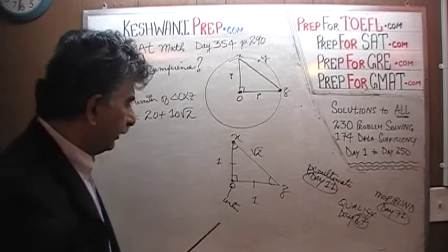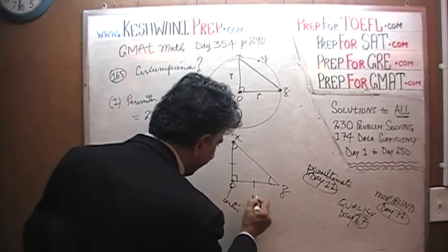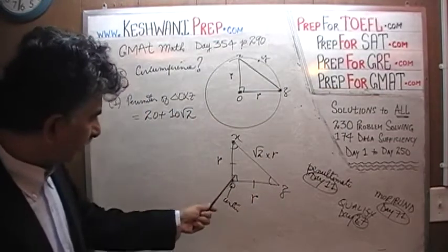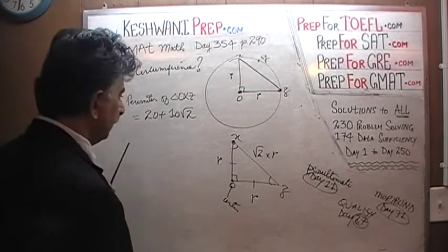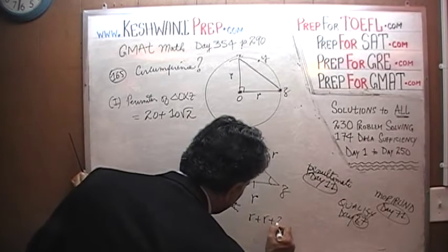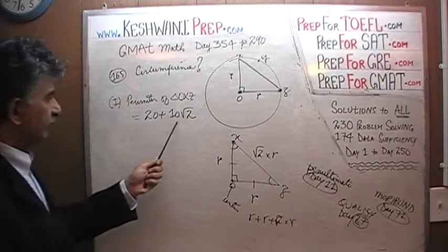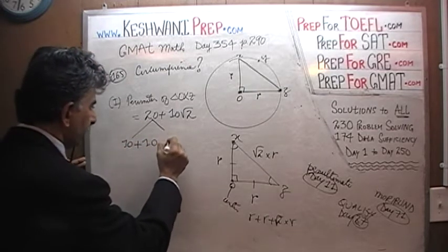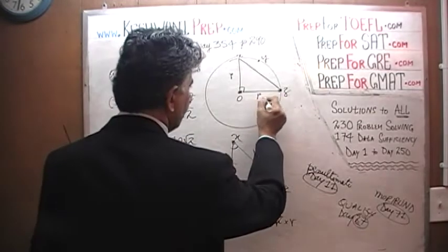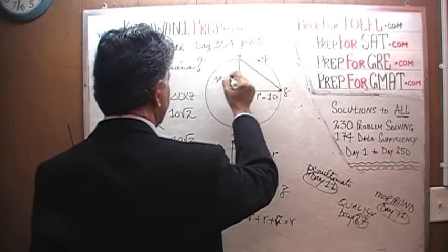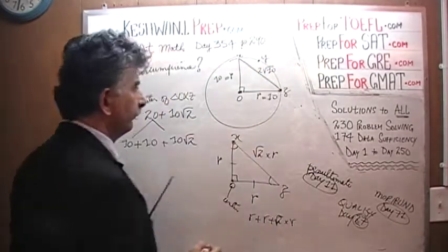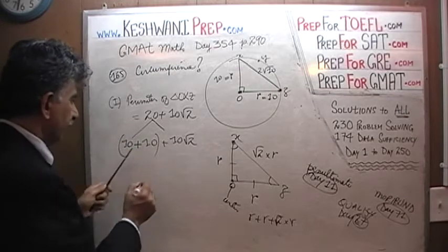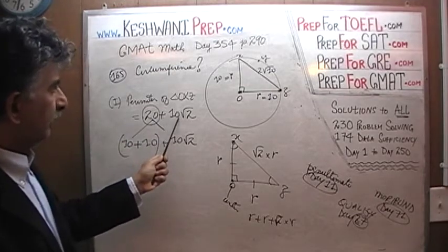In other words, if the radius is R, and this side is R, the hypotenuse is going to be root 2 times R. The perimeter of this triangle is R plus R plus root 2 times R. What we have here — 20 is simply 10 plus 10 — and 10 times root 2. In other words, the radius is 10. So the perimeter is 10 plus 10 plus 10 times root 2, which equals 20 plus 10 times root 2.